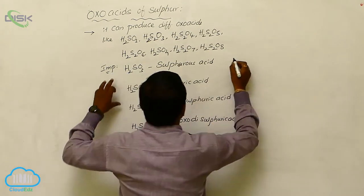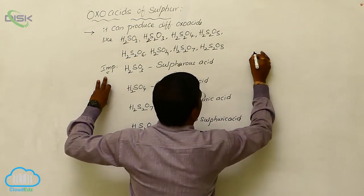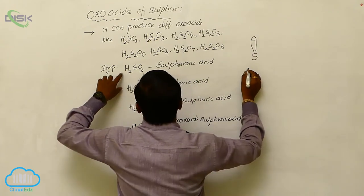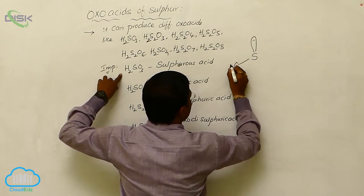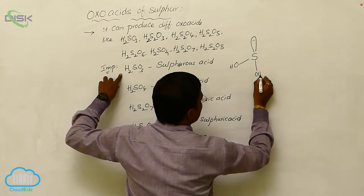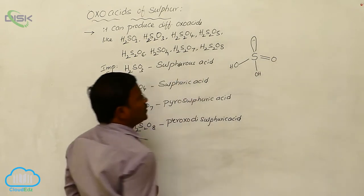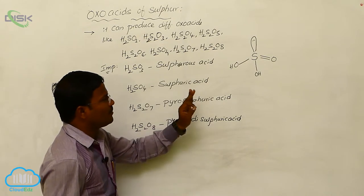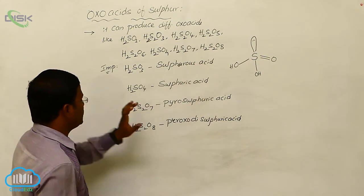Let us look at the structures of each oxoacid. The structure of sulphurous acid H₂SO₃ has two OH groups and one double-bond O, giving it a tetrahedral geometry.